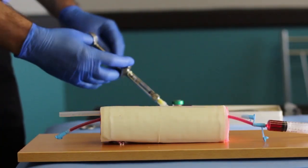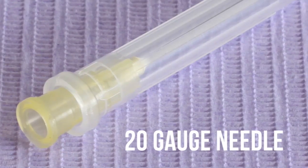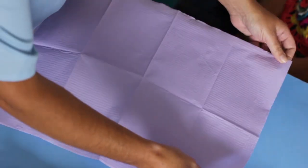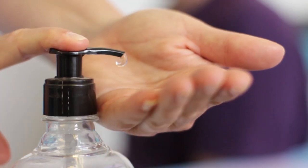You will need the venipuncture trainer, a pair of clean gloves, a 5-milliliter syringe, a 20-gauge needle, a clean work surface cover, the IV fluid bag, and alcohol hand rub.